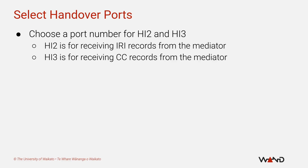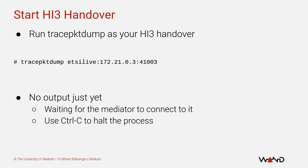Now that we have an IP address and a port, we can run trace_packet_dump as a receiver for the HI3 handover using the command shown on the slide. Note the etsylive prefix on the URI — this tells libtrace that you want trace_packet_dump to act as an ETSI handover endpoint rather than trying to read packets from a trace file or from a capture interface. This is followed by the IP address and then the port number chosen for HI3 — in my case I've chosen 41003. Once you start trace_packet_dump successfully you will not see any output; it is now waiting for a mediator to connect.